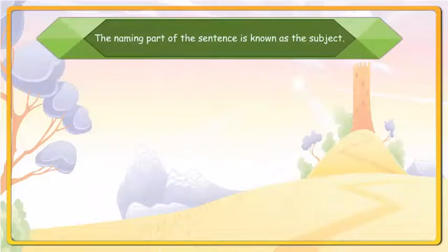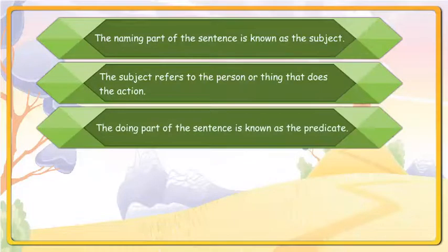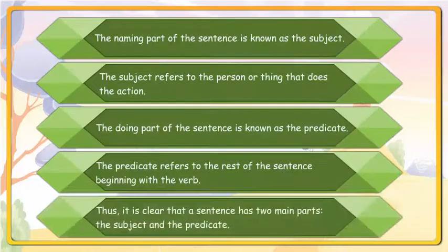The naming part of the sentence is known as the subject. The subject refers to the person or thing that does the action. The doing part of the sentence is known as the predicate. The predicate refers to the rest of the sentence beginning with the verb. Thus, it is clear that a sentence has two main parts: the subject and the predicate.